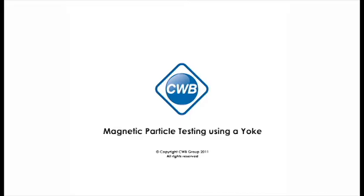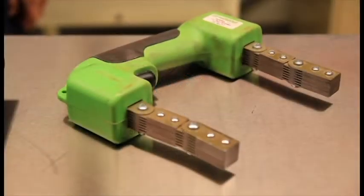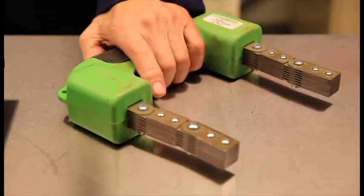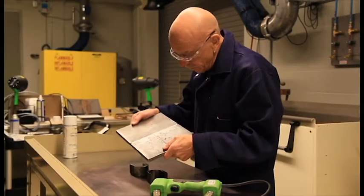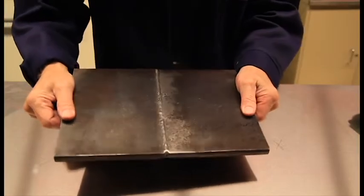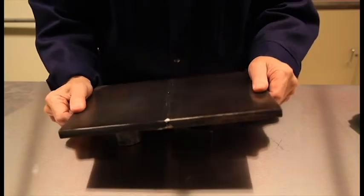In this simple case to show the magnetic particle inspection technique, we are going to use an electromagnet known as a yoke. The piece to be tested is the root pass of a one-sided weld in carbon steel. The carbon steel is magnetic.